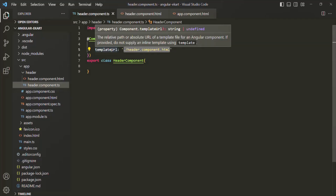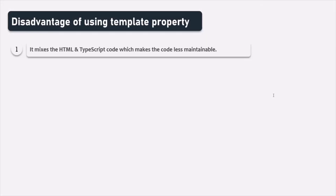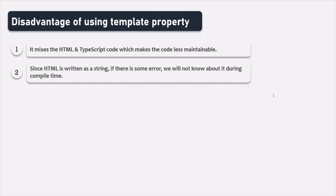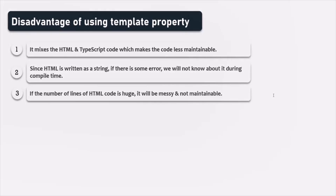When we use the template property for creating the view template, there are some disadvantages. First, we are mixing HTML and TypeScript code in the same file, which makes the code less maintainable. Second, since HTML is written as a string, if there is some error — like a missing closing tag — we will not find out during compilation time, only at runtime. That is another big disadvantage. Also, if the number of lines of HTML is large, it will make the code messy and non-maintainable.